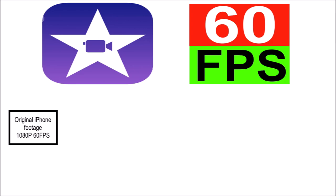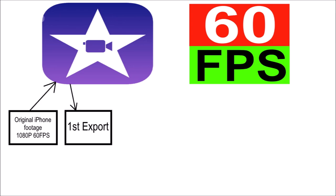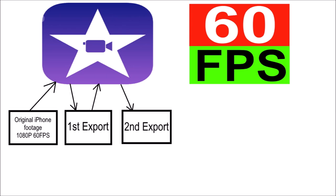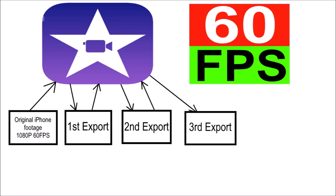To briefly explain what I'm going to be doing: I'm going to take original iPhone footage, load that into iMovie, then export it as my first export. Then I'll take that footage, import it back into iMovie, export it, import that back in, export again — basically doing that 10 times. By the 10th export we'll see if the footage has degraded.